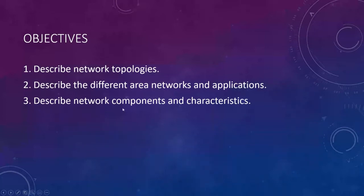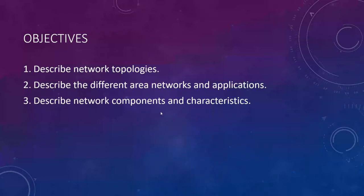Objective three is to describe network components and characteristics — some of the hardware involved in a network. A lot of this will ring a bell because it's not only in industrial systems; it's also in commercial and residential systems. We have hardware in our houses that connects us to the internet, and it's essentially the same stuff — just differences in price and reliability factors for industrial applications where downtime costs a lot of money.